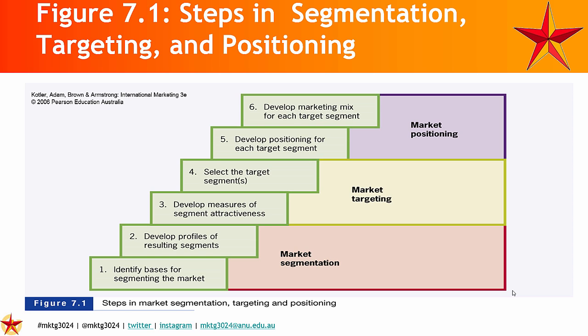The first step in market segmentation, targeting, and positioning is identifying the basis for segmenting a market. There are many different ways to do this, but top of the list of your criteria would be responsiveness to the social problem and the social solution. We then build a set of profiles — this is where we start looking at alternatives.